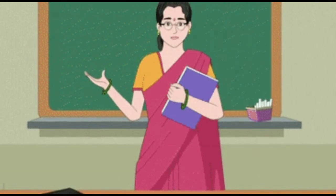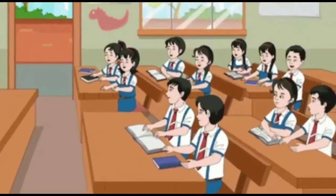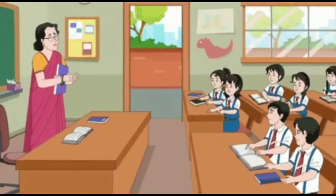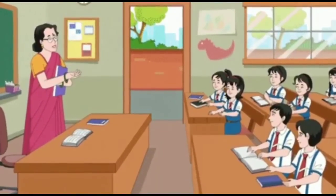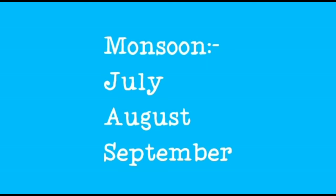Let's look at the cycle of seasons in India. Winter is in December, January, and early February. Spring is in late February and March. Summer is in April, May, and June. Monsoon is in July, August, and September. Autumn is in October and November.